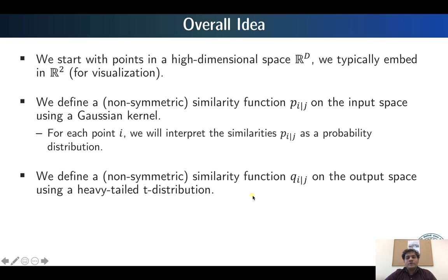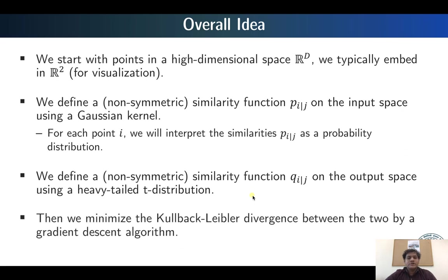Now we have two different similarity functions computed in both input space and output space, which can be interpreted as two different probability distributions. The goal is to minimize the Kullback-Leibler divergence between these two distributions, performed using a gradient descent algorithm. The KL divergence is minimized so that points which are nearest neighbors in the high dimensional space also become nearest neighbors in the lower dimensional 2D space. This is the overall idea of the algorithm.